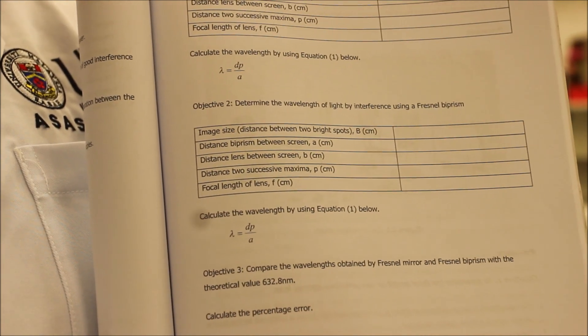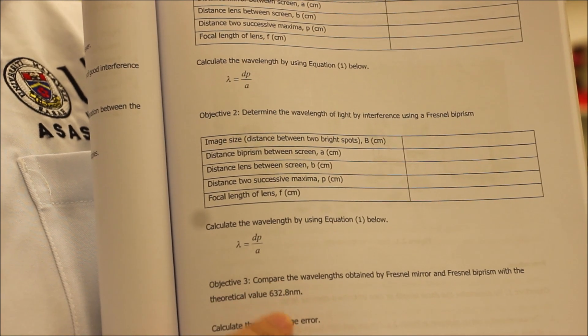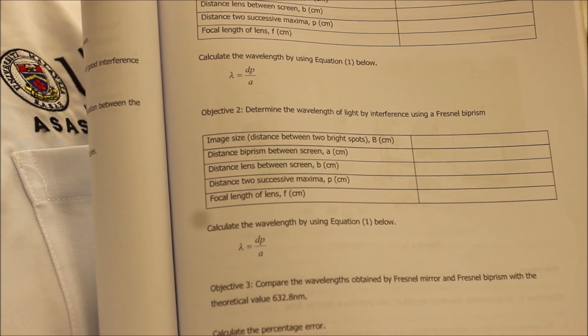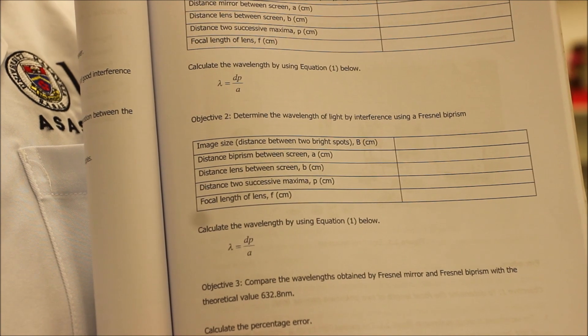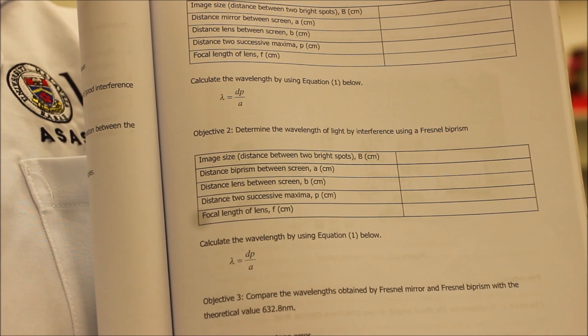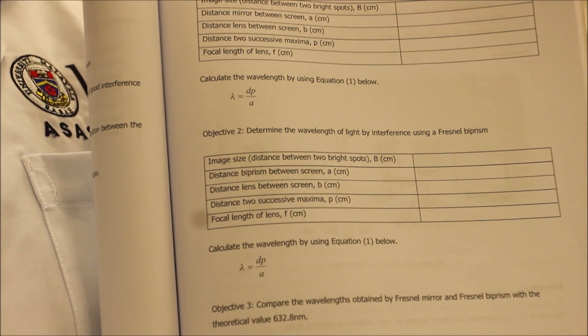After you have both of these wavelengths, you have to calculate it in objective 3's appendix. Calculate it and compare it to the theoretical value given 632.8 nanometer. And don't forget to calculate the percentage errors and please show us your calculation.